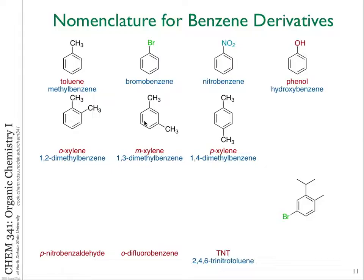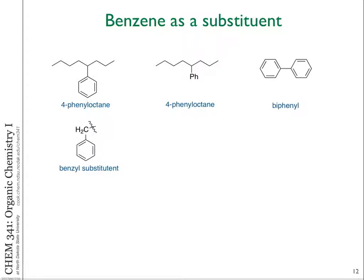Benzene is sometimes used as a substituent on larger molecules. If the benzene ring is not the parent, we refer to it as a phenyl substituent. If you have a carbon chain more than six carbons — like an octane — you name the benzene ring as a substituent: phenyl. So 4-phenyloctane. Lazy organic chemists often abbreviate that with a capital Ph, referring to a phenyl group — just a benzene ring.